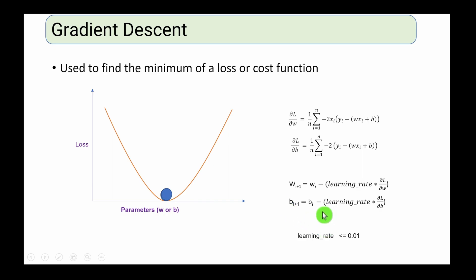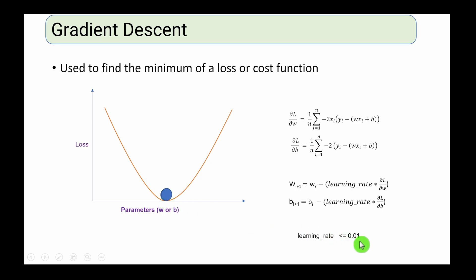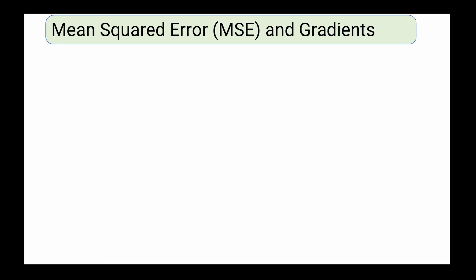Regarding learning rate: it is a very small number, usually less than 0.01. If you use a very small learning rate it will take longer to reach the minimum of the loss function, but if you use a larger learning rate you will overshoot and miss the minimum value.